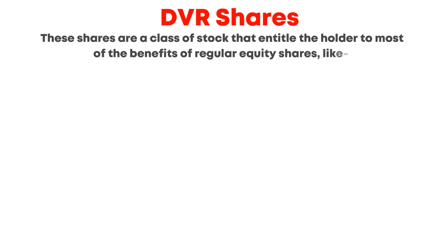Second, lower price: DVR shares typically trade at a discount to regular shares due to the lower voting rights, which can be an opportunity for value investors. Third, liquidity: DVR shares are listed on stock exchanges just like regular shares, offering good liquidity. Now for the disadvantages. First, lower voting rights: the main drawback is the limited voting power — DVR shareholders have less say in decisions like electing directors or approving mergers. Second, price volatility: DVR shares can be more volatile than regular shares, especially during market downturns.